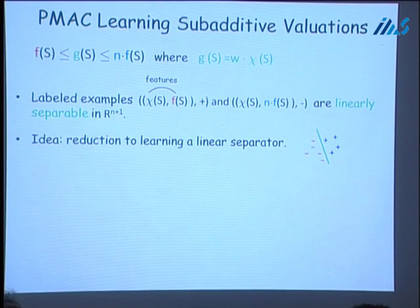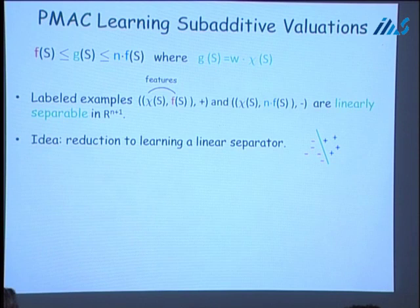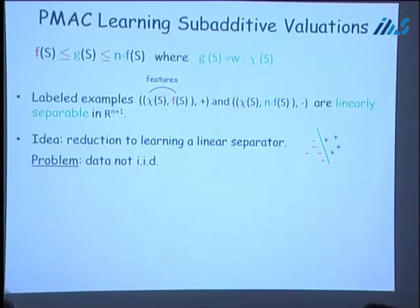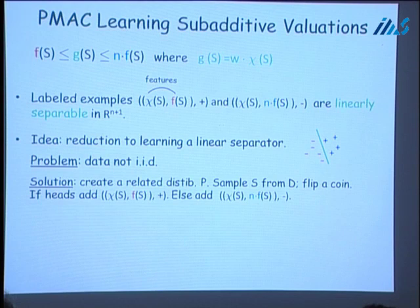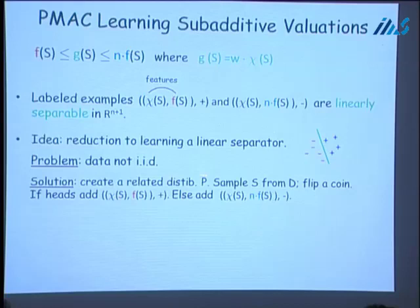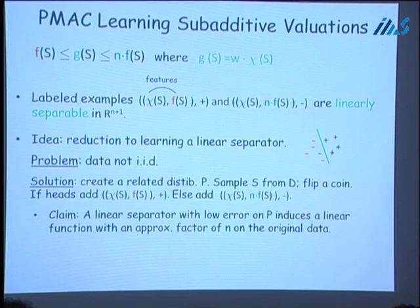What we could hope to do is map our original training set into R^{n+1}, learn a linear separator there, and output a linear function induced by that separator. The problem, however, is that the induced data in R^{n+1} is not IID. So what we do instead is: starting from the original distribution over subsets, we get a new distribution in R^{n+1} as follows. To draw a sample, we first draw from the original distribution, flip a coin — if heads, add the positive example; otherwise add the negative example. We can then show that a linear separator learned on the induced distribution in R^{n+1} induces a linear function with approximation factor N on the original data.